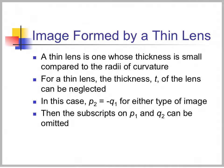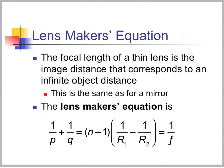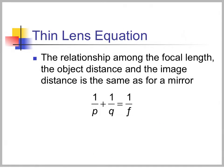A thin lens is one whose thickness is small compared to the radius of curvature. For a thin lens, the thickness T is neglected, so P2 equals minus Q1 for either type of image, and the subscripts P1 and Q2 can be dropped. We define the focal length of a thin lens as the image distance corresponding to an infinite object distance, which makes it the same as for a mirror. The lens maker equation becomes 1 over P plus 1 over Q equals N minus 1 times the quantity 1 over R1 minus 1 over R2, and we call this whole quantity 1 over the focal length.